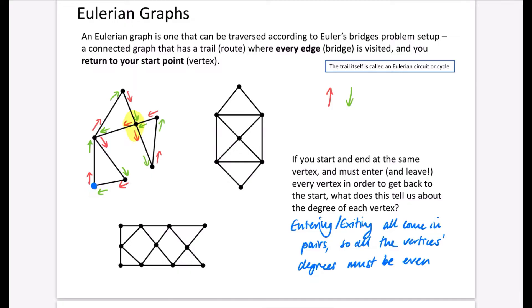You can verify this on the example graph: the starting vertex has degree two, then degree four, two, two, and two — all even. You can check the other Eulerian graph examples mentally by counting that all degrees are even, confirming that any graph which can be traversed starting and ending at the same point will have all even vertex degrees.